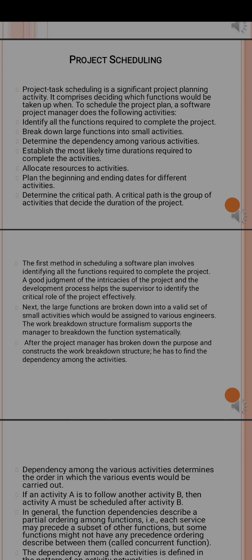In the last step, you go to the critical path. The critical path is a group of activities that decides the total duration of the project. To summarize: identify all functions, break down large functions into small activities, determine the dependency among various activities, establish the most likely time durations required to complete the activities, allocate resources to activities, plan the beginning and ending dates for different activities, and determine the critical path.